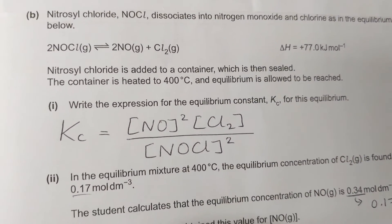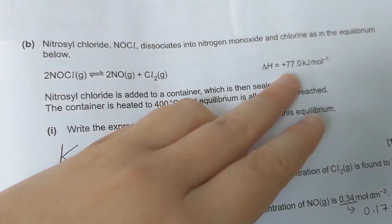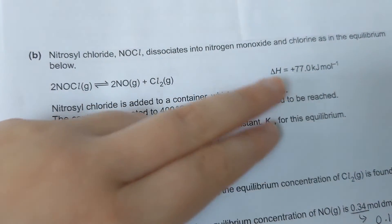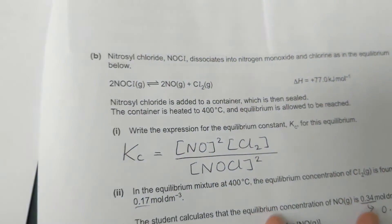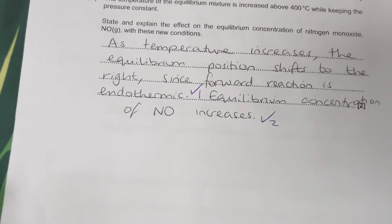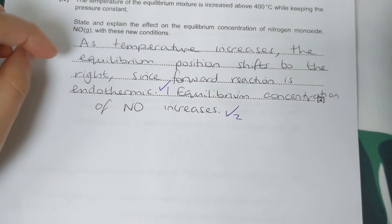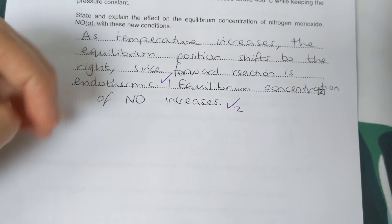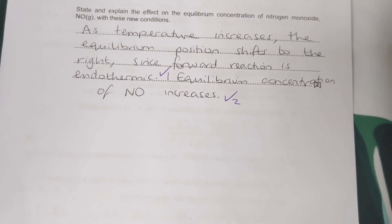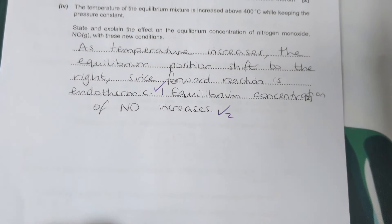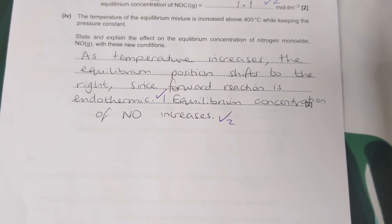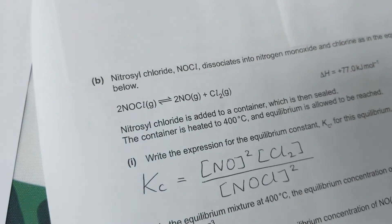If we look back at the balanced equation, we can see the reaction is endothermic in the forward direction because we have a positive delta H. So as we increase temperature, the equilibrium position will shift to the right because that forward reaction is endothermic. This means that the equilibrium concentration of NO will increase because that is on the right.